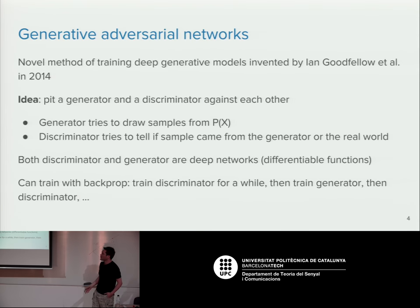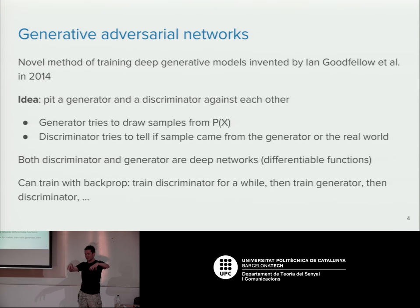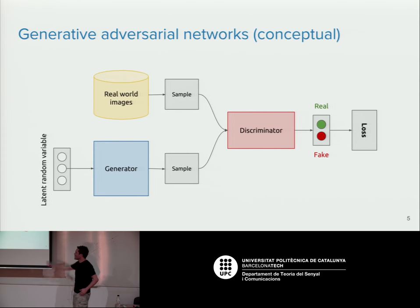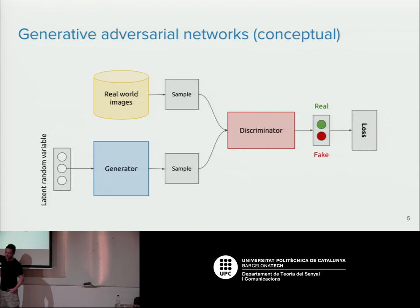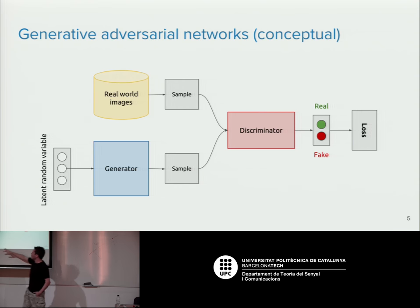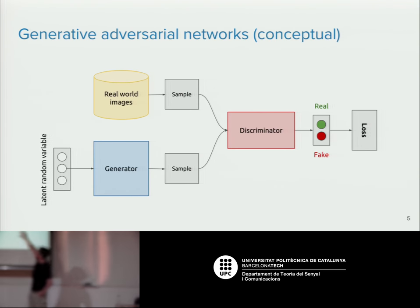The idea of GANs comes from 2014 — the concept is to pit a discriminator against a generator, two deep models trying to trick each other. We have real world images gathered from ImageNet, CIFAR-10, Flickr, or wherever. We take some noise — usually Gaussian random noise — pass it through the generator and produce samples that look like real world images. Then a discriminator tries to tell whether they're real or fake. That's the high-level idea.